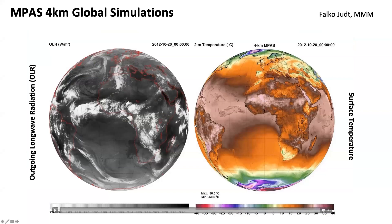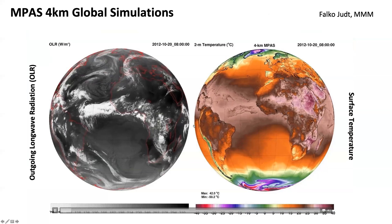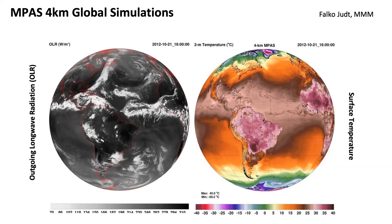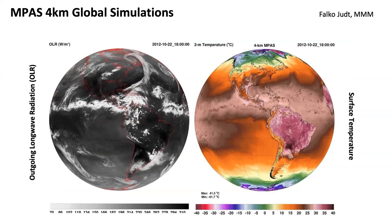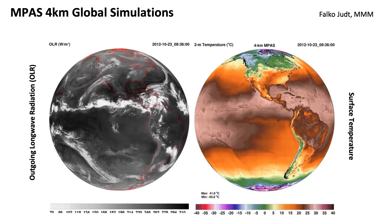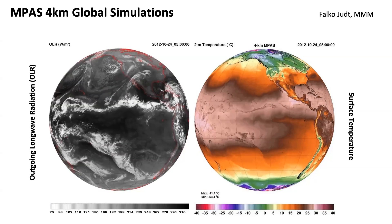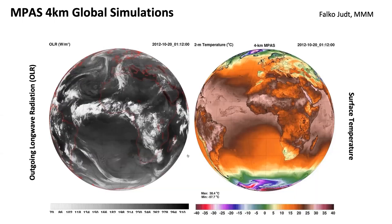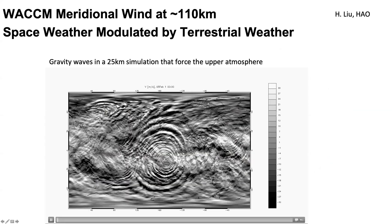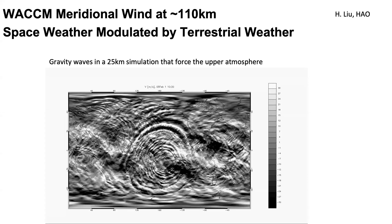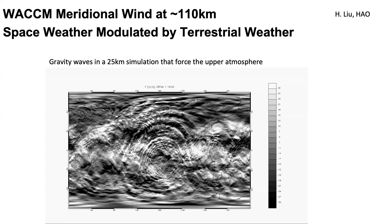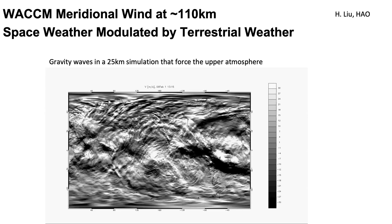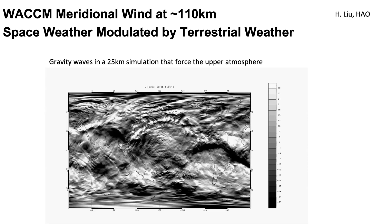We can also look at weather-type simulation. This is a global cloud system resolving model — a 4-kilometer simulation done globally with MPAS. Shown on the left is the outgoing longwave radiation, which looks very much like a satellite image; shown on the right is high-resolution surface temperature. You can clearly see the diurnal cycle of temperature moving across the globe over the course of the day. This is also a representation of gravity waves at 110 kilometers in the atmosphere — waves bubbling up from the troposphere from tropical convection — and the large-scale tides at this level. These are things from below that force the upper atmospheric circulation that modulates space weather.